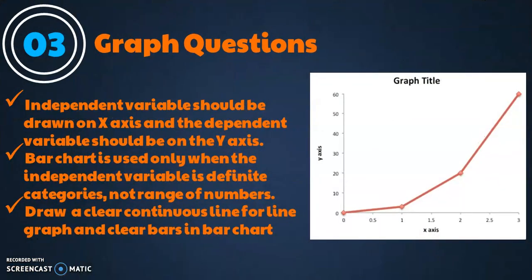Graph questions: independent variables should be drawn on the x-axis and the dependent variable should be drawn on the y-axis, as already discussed. Bar charts are used only when the independent variable is definite categories, not a range of numbers. Sometimes you are going to draw a bar chart, so the buildings that you are drawing inside should be separate and concrete. Draw a clear continuous line for line graphs and clear bars in the bar chart.